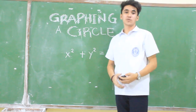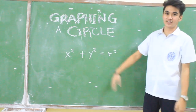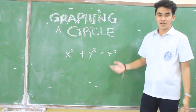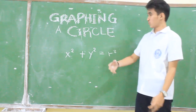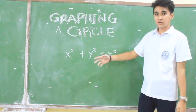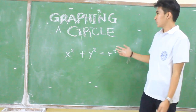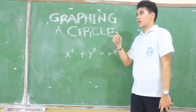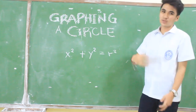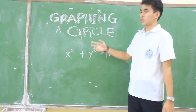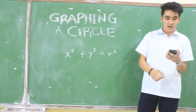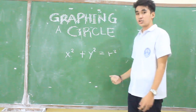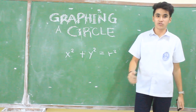Hello guys! Today our lesson is all about graphing a circle. In this lesson, we will have a short recap about circles, and we will help you determine if a graph is a circle or an ellipse. We will show you how to determine if an equation is a circle or an ellipse. Then, of course, in graphing a circle, we will teach you how to find the center and the radius, and lastly, how to graph the circle.